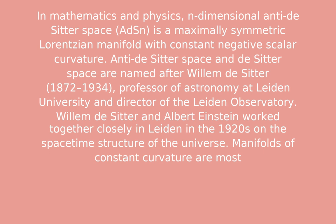Anti-de Sitter space and de Sitter space are named after Willem de Sitter, professor of astronomy at Leiden University and director of the Leiden Observatory. Willem de Sitter and Albert Einstein worked together closely in Leiden in the 1920s on the space-time structure of the universe.